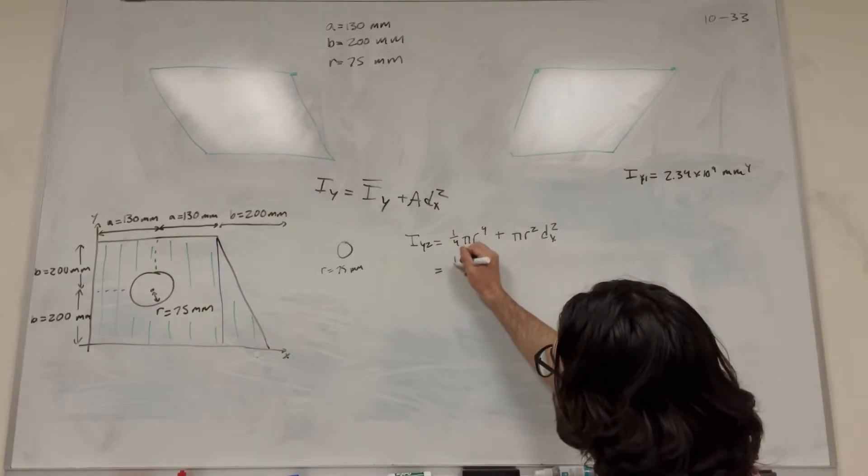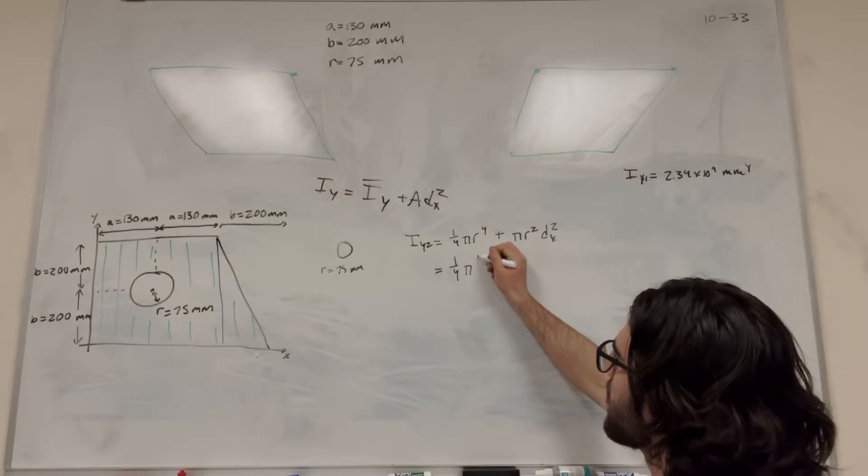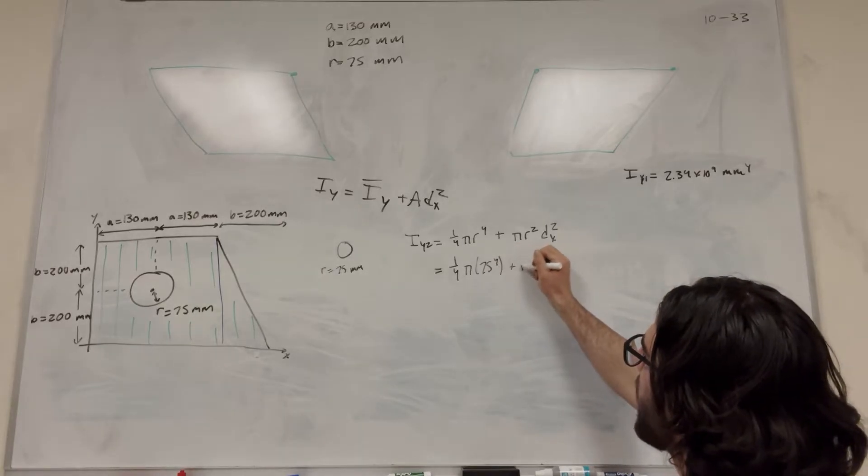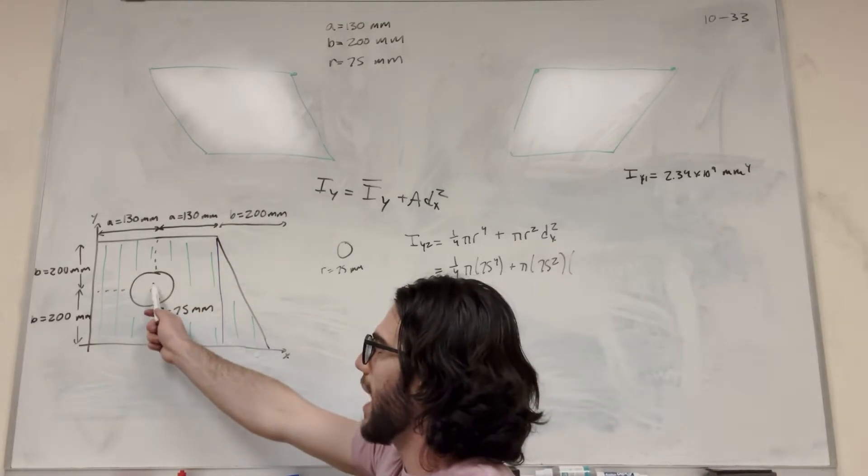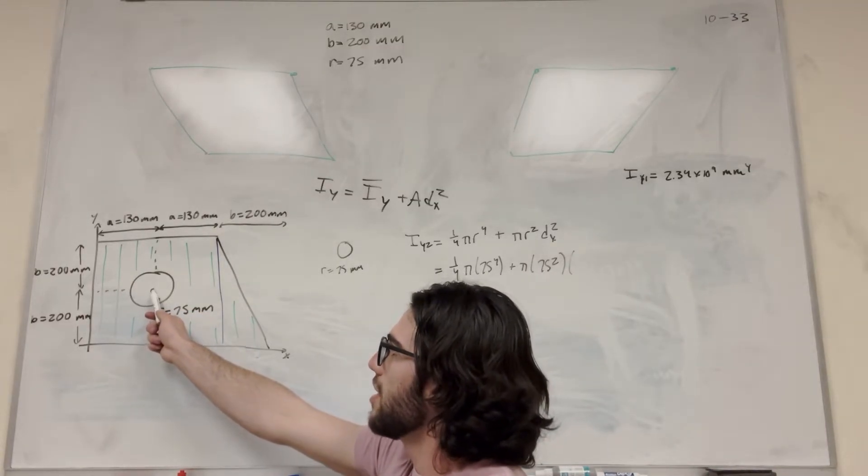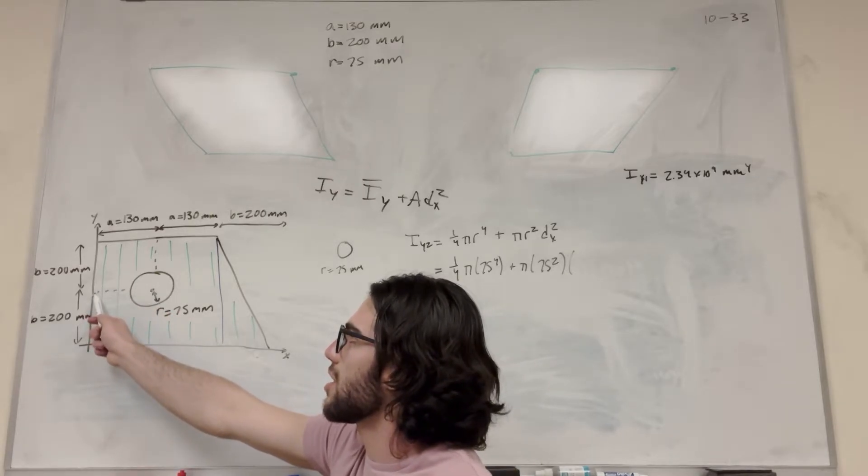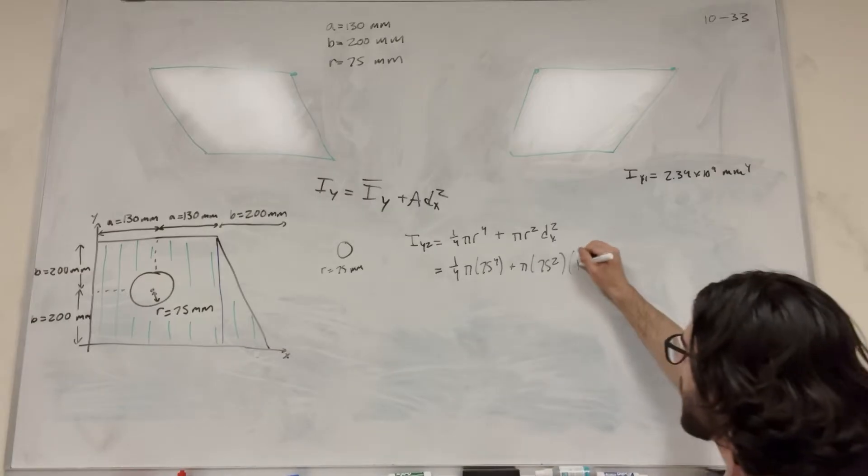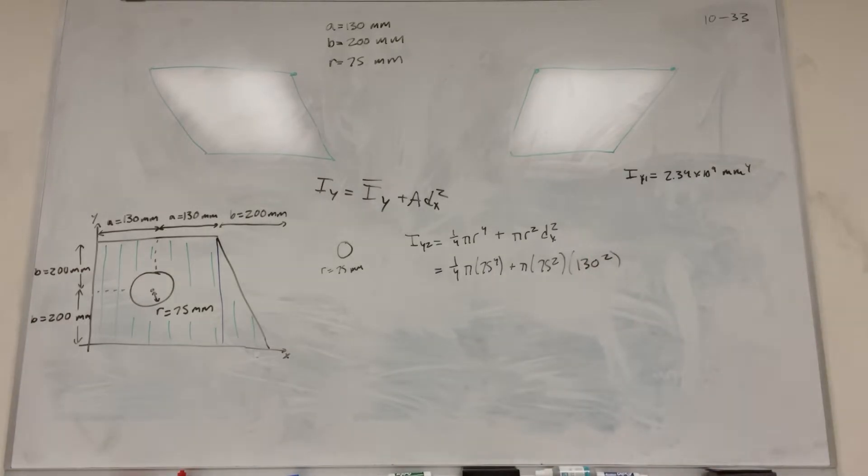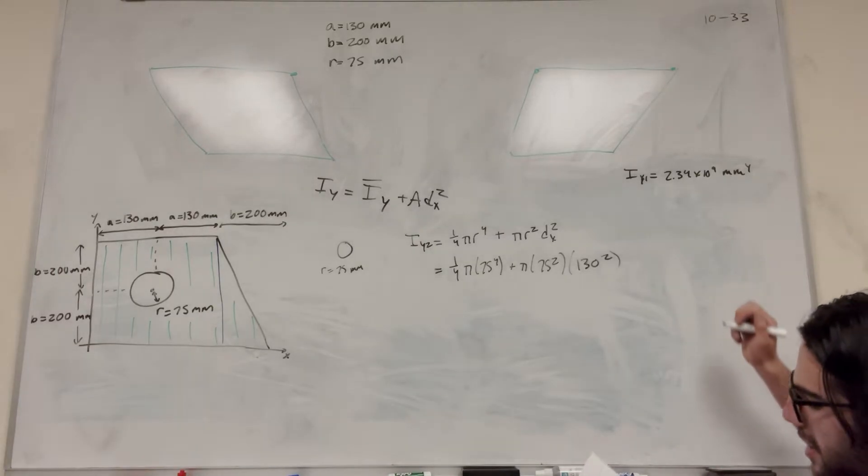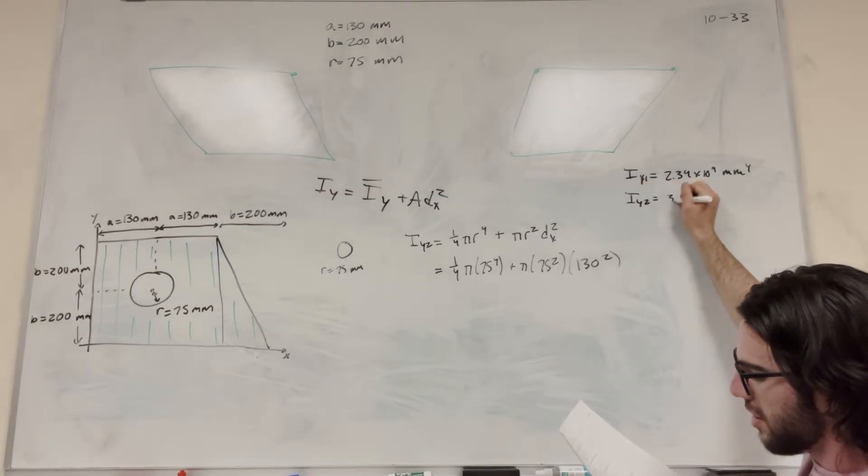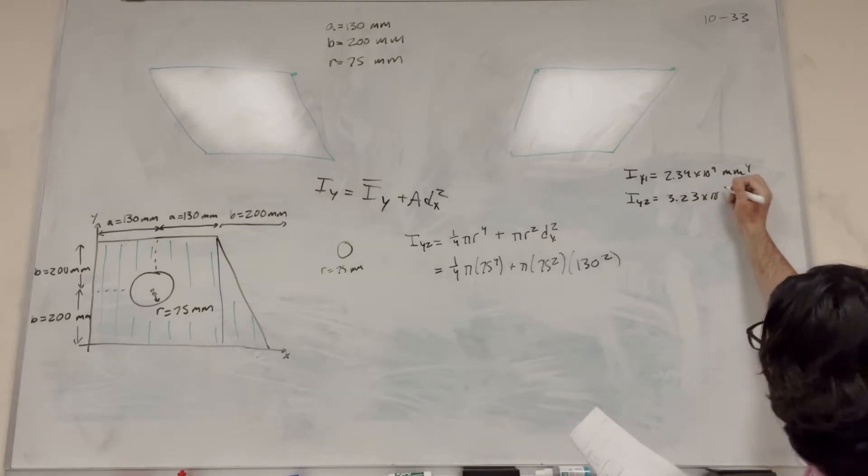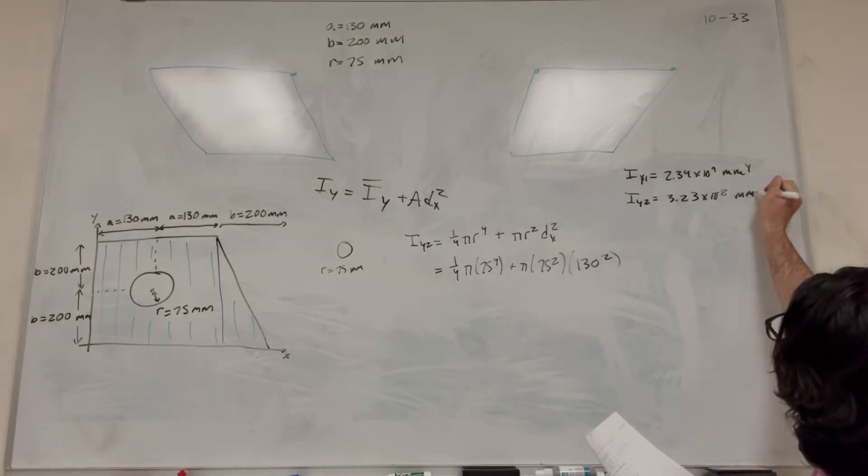Let's plug in our numbers. So 1 over 4, pi radius 75 to the 4th, plus pi, 75 squared, and then distance in the x. We're doing the same thing here. The center of mass of the circle is going to be right at the center. And we know that its center is 130 millimeters away from the y-axis. So this is just going to be 130 again, squared. So make sure I did this right. I did do it right. Plug this into your calculator.